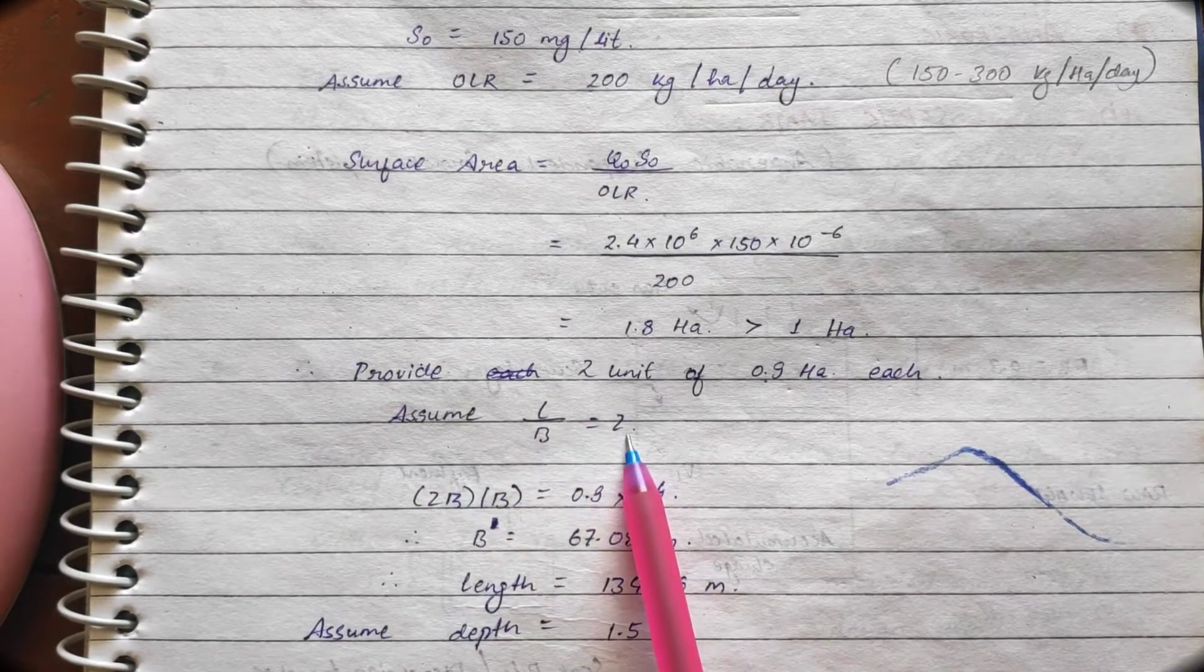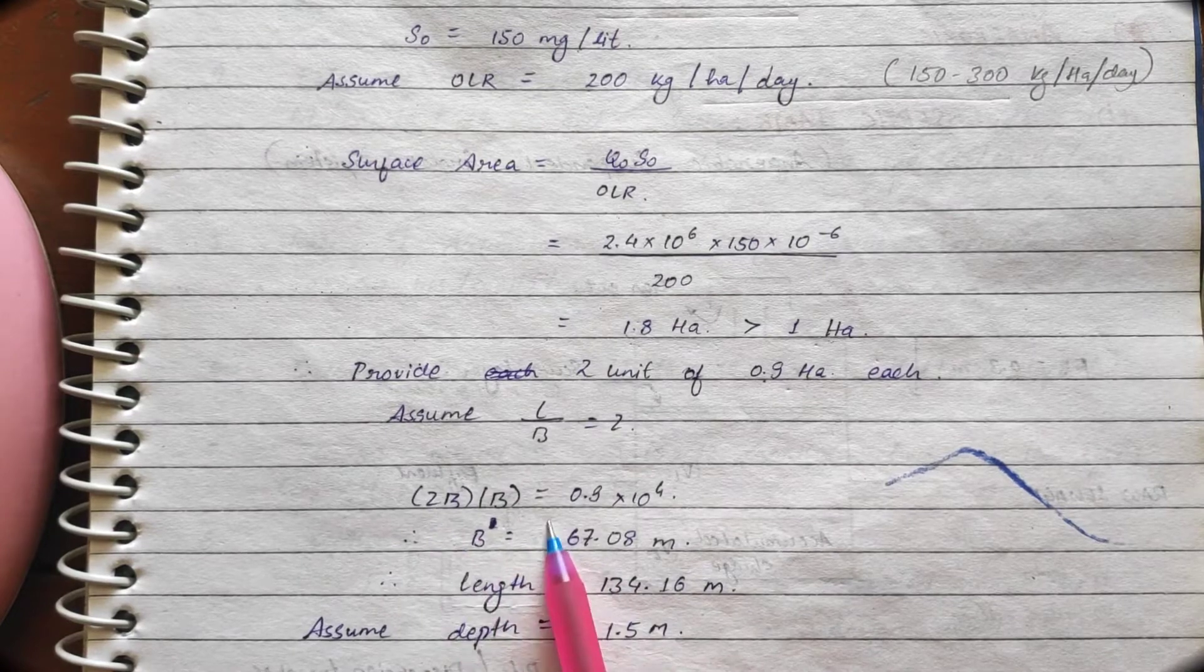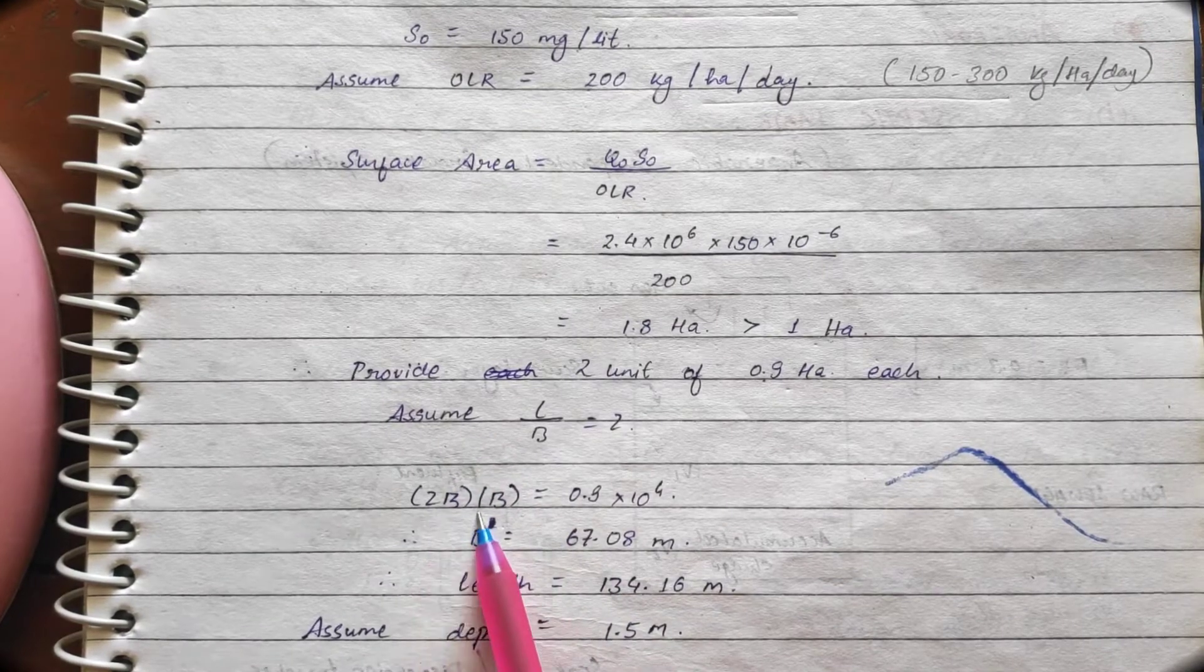Now, assume L by B to be 2. So, from here we can calculate the length and width and length. How we have calculated? The area equals to L into B.